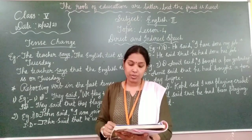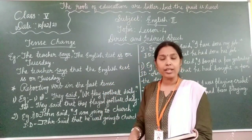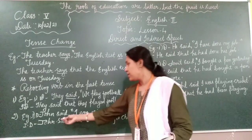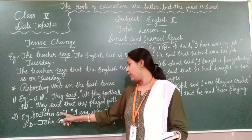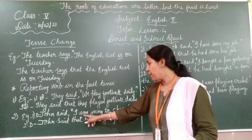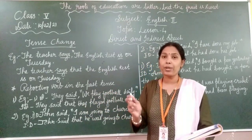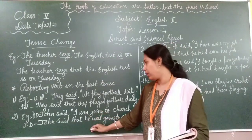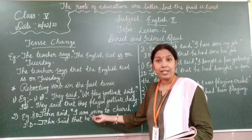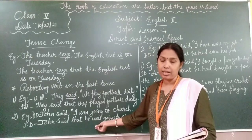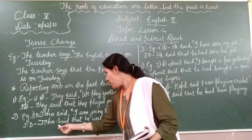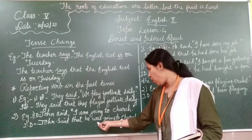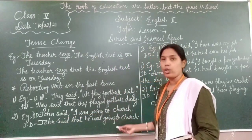Next: present continuous becomes past continuous. If the direct speech is in present continuous tense, it changes to past continuous tense. See the example: John said, 'I am going to church.' The reporting verb 'said' is past tense. 'I am going' is present continuous. It changes to past continuous. John said that he was going to church. 'I' became 'he,' and 'am going' became 'was going.'